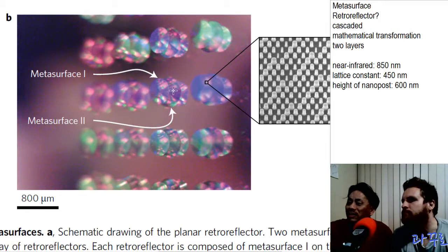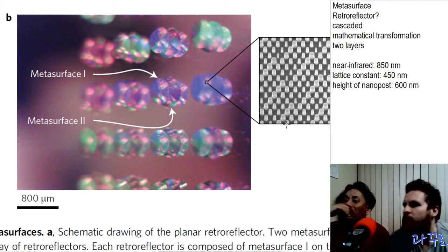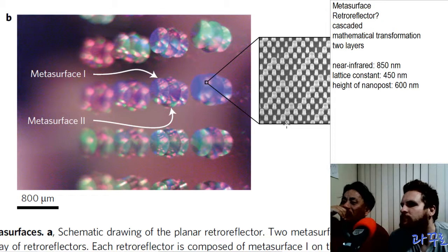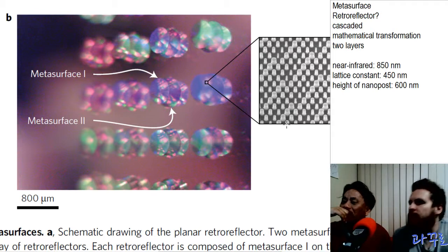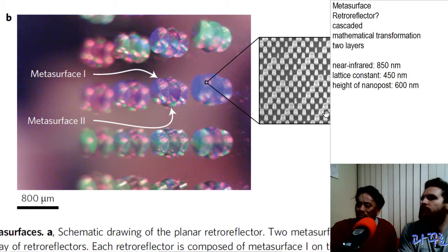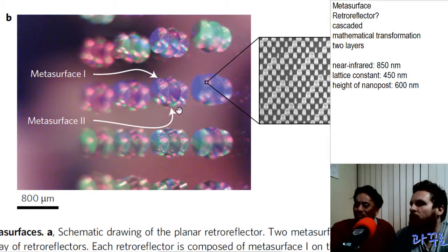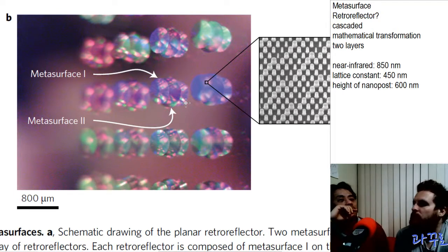This one whole thing is a metasurface one and this whole thing is metasurface two. And if you zoom in, then you will see the nanostructure. So then there's a real image with a nice camera. It seems to be taken at a slight angle so you can see through the glass. And you see the reflection of metasurface one in the metasurface two.